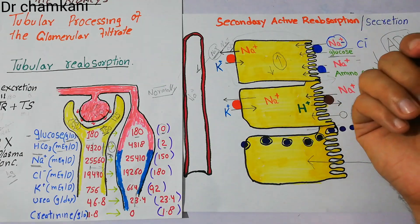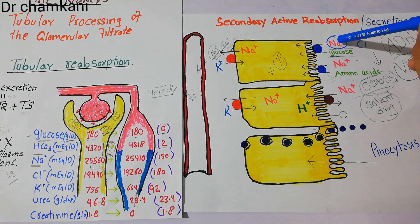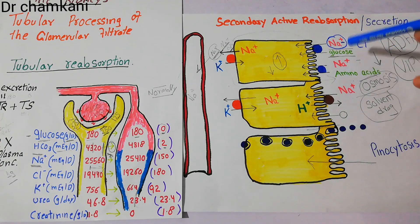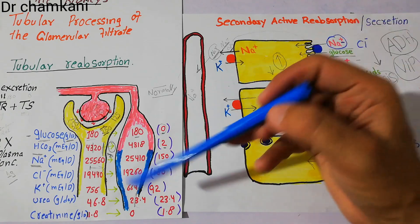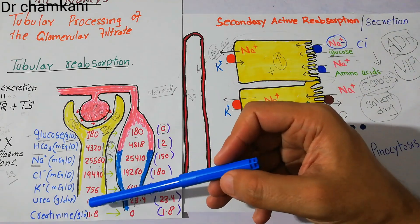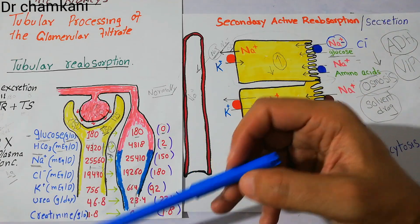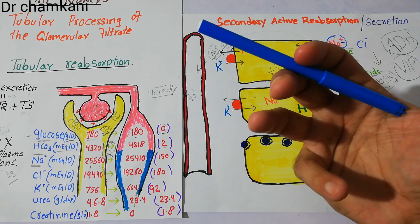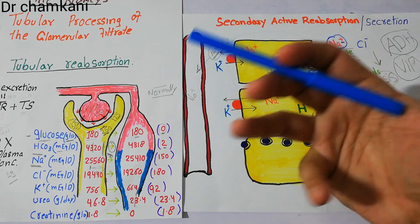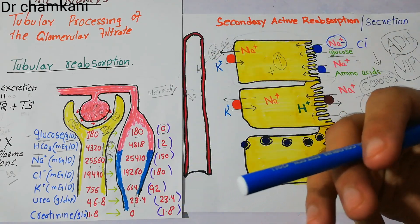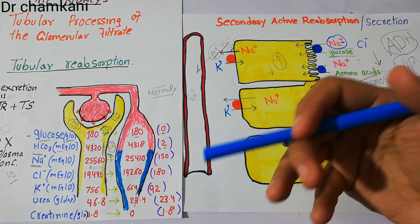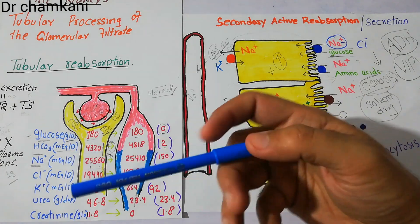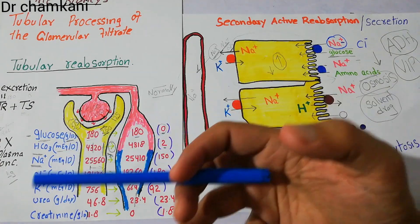Previously we discussed that glucose makes friendship with sodium — sodium being a rich substance helps glucose and amino acids. Sodium also helps chloride. But sodium refuses to help urea and creatinine. And here comes the intelligence of the kidneys — how intelligently the human kidneys get rid of waste materials.